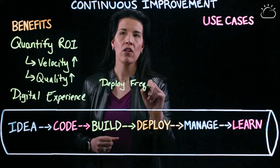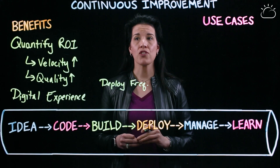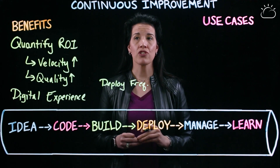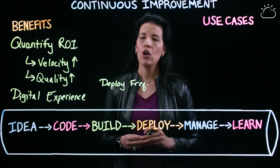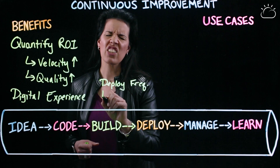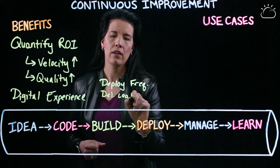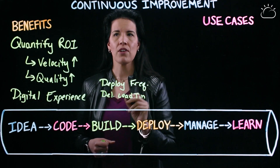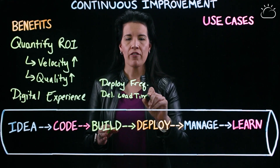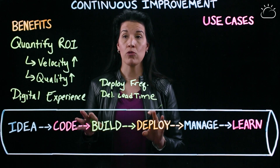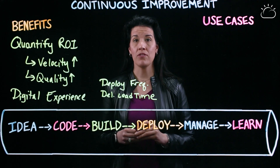Deployment frequency is all about understanding the number of deployments to production that are measured in days, weeks, or months. We also have something called delivery lead time, which is all about how long it takes to get from code all the way through to deployment, and this is typically measured in number of days.